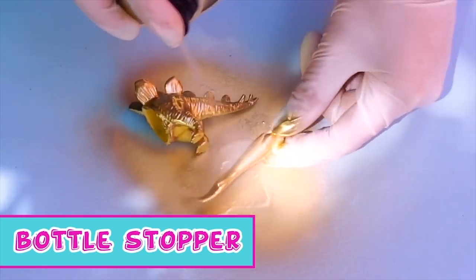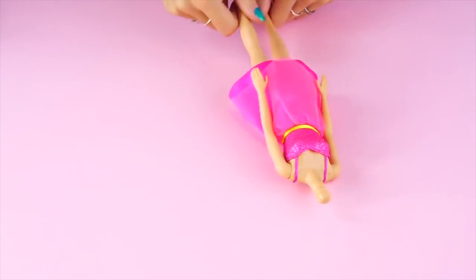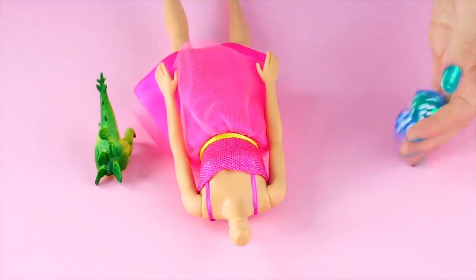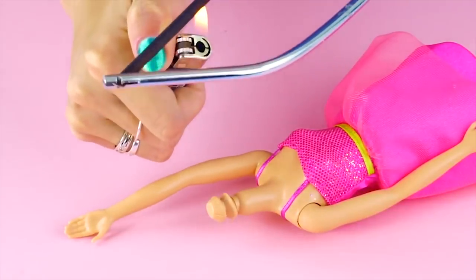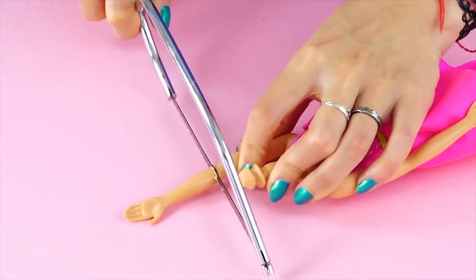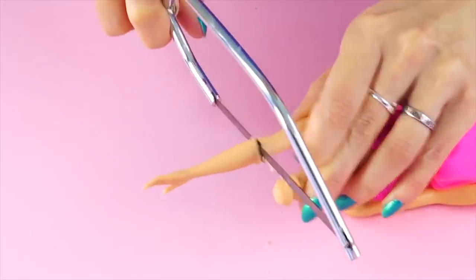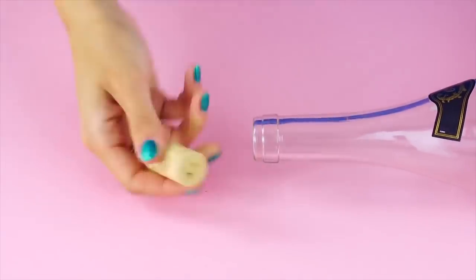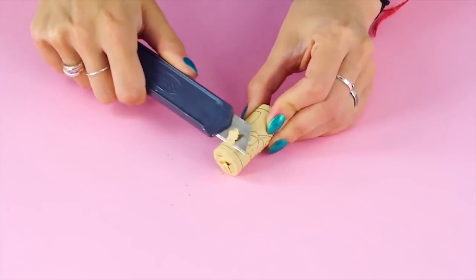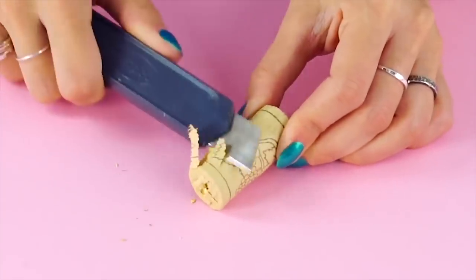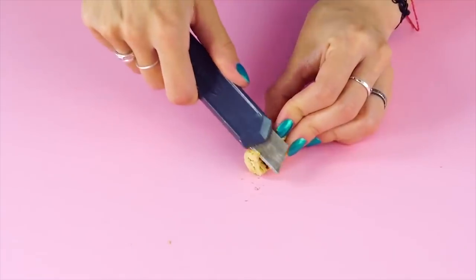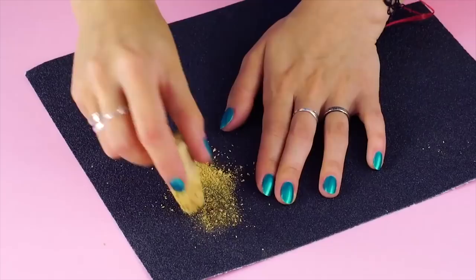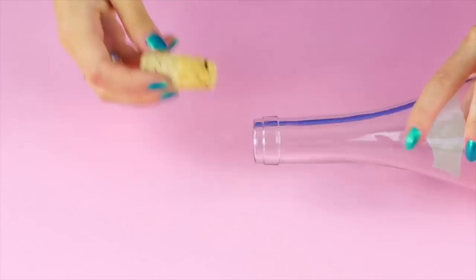Bottle stopper. Remember that Barbie we used earlier? Well, here's a good use for the rest of her. You'll need a plastic dinosaur and some dice too. Heat up the blade and cut off an appendage from the doll's body. Next, find some old corks. If they don't fit in the bottle, use an exacto knife to trim them down. Smooth the cork with some sandpaper. Perfect fit.